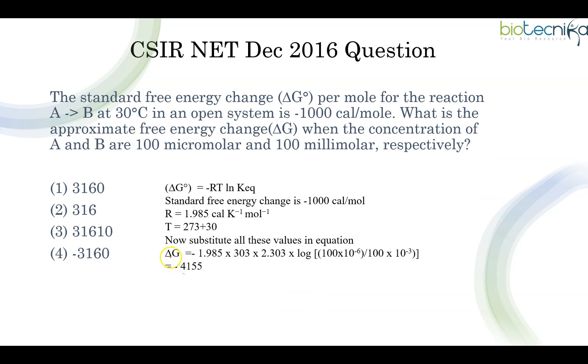If you calculate it properly then it will come to 4155 and there is a minus sign over here. So this is what we have got the ΔG value. And question is asking about the free energy change. So subtract from the free energy change: -1000 was the standard free energy change. You have to subtract from here with the sign. So that's why the answer will come to 3155 which is closer to option 1. Option 1 is the right answer here.